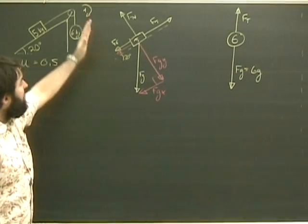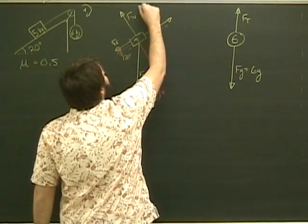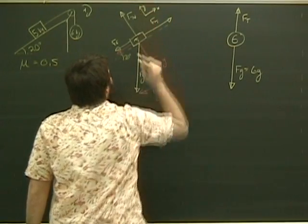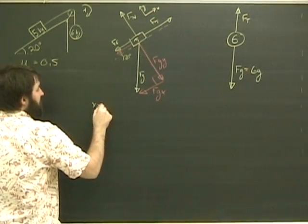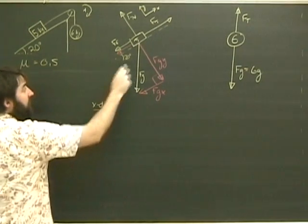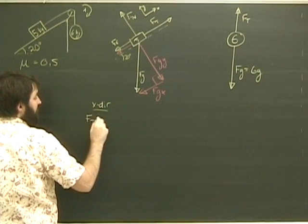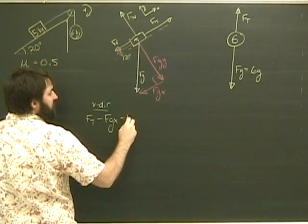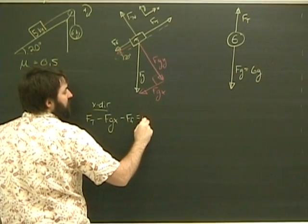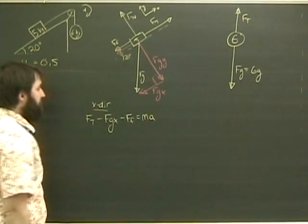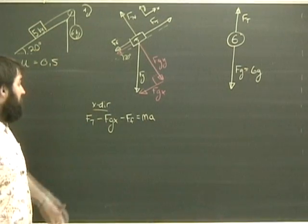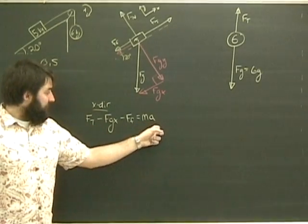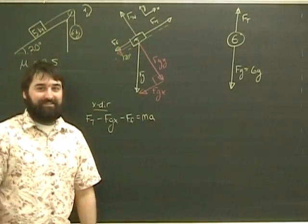So now what do I do? I look in my directions. I better define my directions. Up the ramp here is x, perpendicular is y. So in the x direction, what do we get? We get tension minus Fgx minus Ff equals ma. We don't know tension, we don't know A, and we don't know Ff. So we've got a lot of work to do.